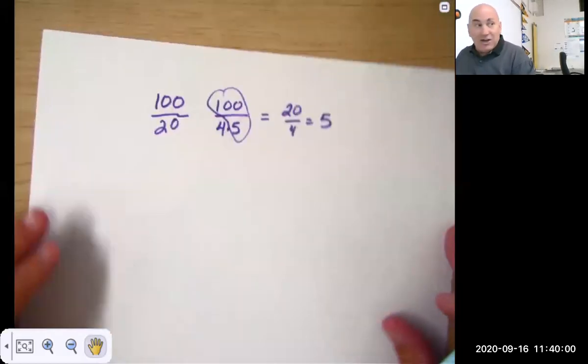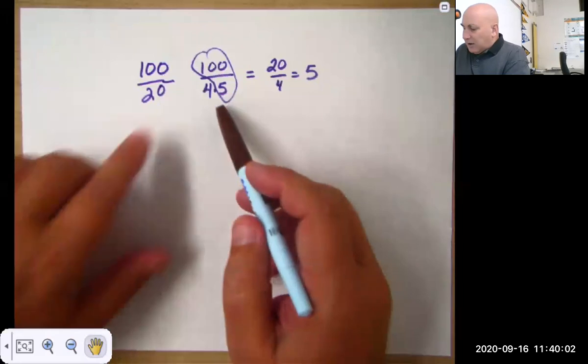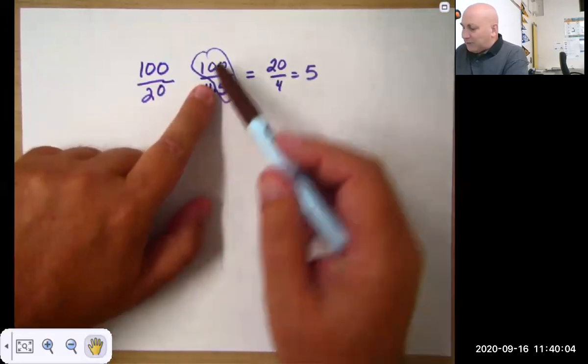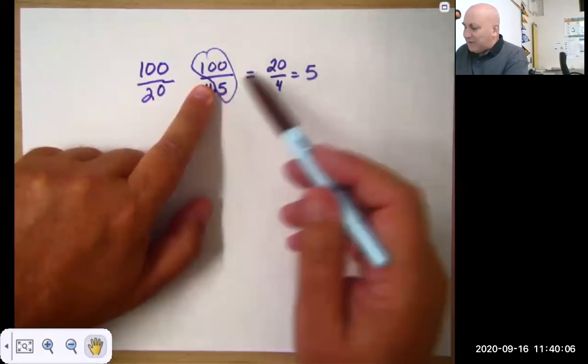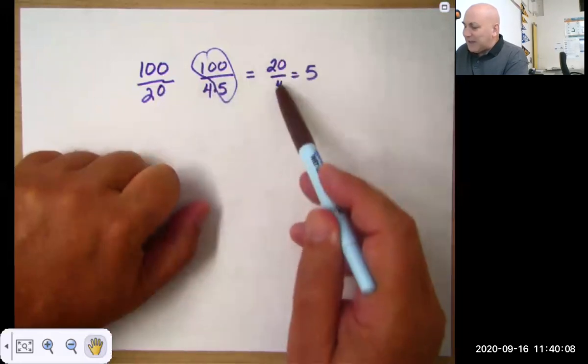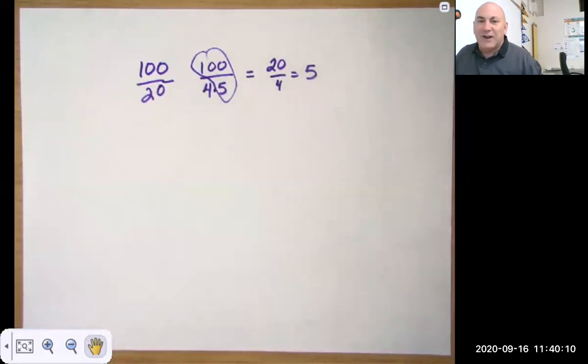Well, if I'm dividing 100 by 20, if I factor a 4 out, I'm just dividing 100 by 5. I still have to divide by that other 4 to get the correct answer.